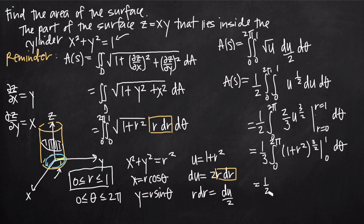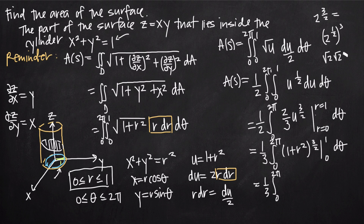Evaluating at the upper limit r equals 1: we get 1 squared plus 1 equals 2, and 2 raised to the 3/2 power equals 2 to the 1/2 cubed, which is the square root of 2 cubed. That gives us square root of 2 times square root of 2 times square root of 2 — two of these multiply to give 2 — so we get 2 root 2. Evaluating at r equals 0: 0 plus 1 equals 1, and 1 to the 3/2 is just 1. So our expression is 2 root 2 minus 1, and then dθ.